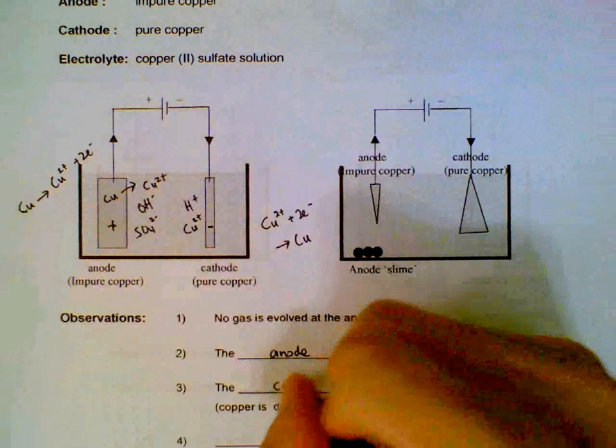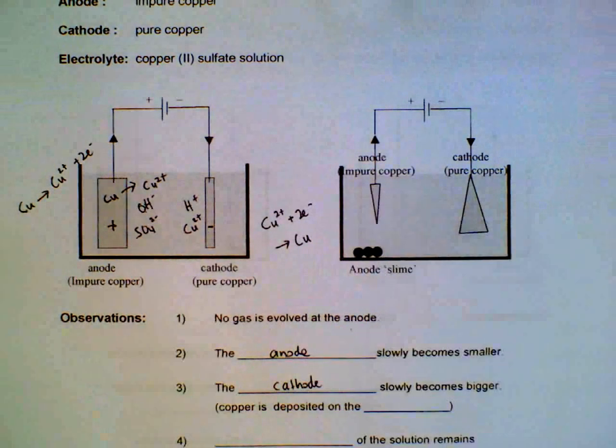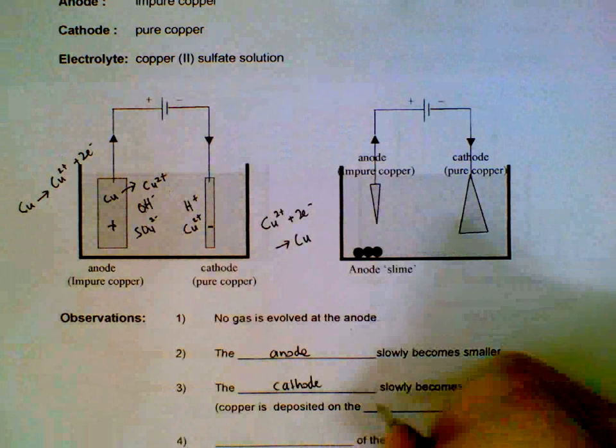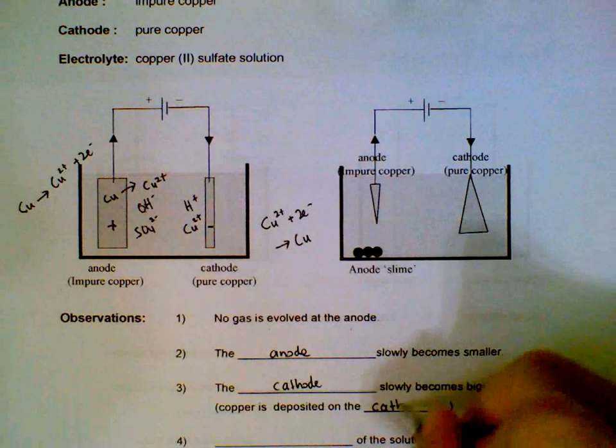The cathode will become bigger as we get more and more copper deposited on the electrode.